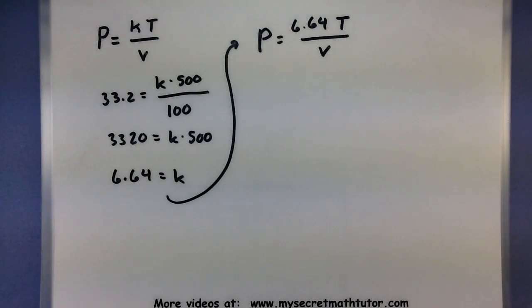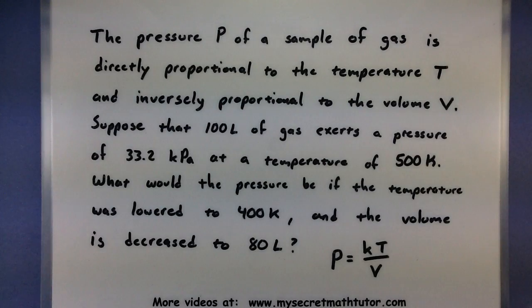Now for the second half of this, we've changed the temperature and the volume of the gas just a little bit. So what would the pressure be if the temperature was lowered to 400 Kelvin and the volume was decreased to 80 liters?